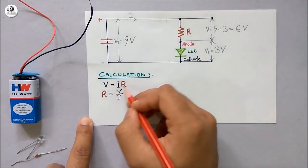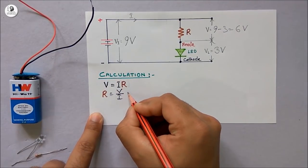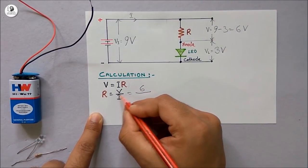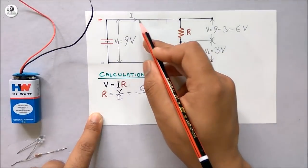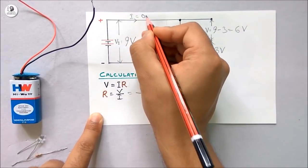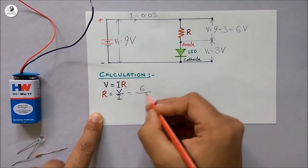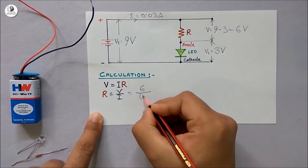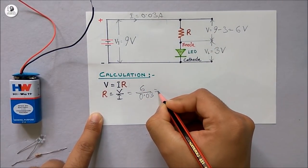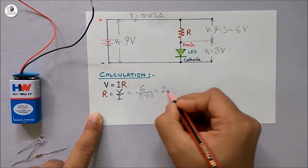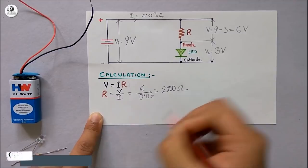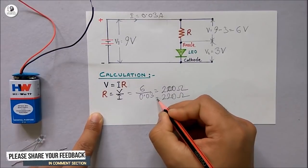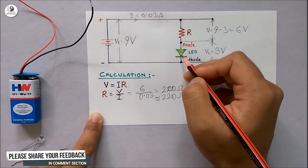From this equation, we can easily measure the value of the resistance. We have already got the voltage across the resistance, and we know the current rating of the LED. The current I should be within the limit of 30 milliampere, which is 0.03 ampere. So if we calculate the value of R, we will find 200 ohm. Here in the circuit, I will use 220 ohm to limit the current within 30 milliampere.